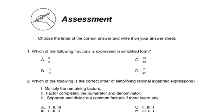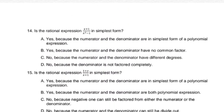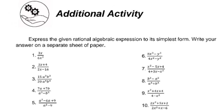Next is the assessment, where you will answer 15 questions. The last activity is an additional activity: express the given rational algebraic expressions to their simplest form. Write your answer on a separate sheet of paper. You will simplify 10 rational algebraic expressions. That's it for this video — thank you and good day.